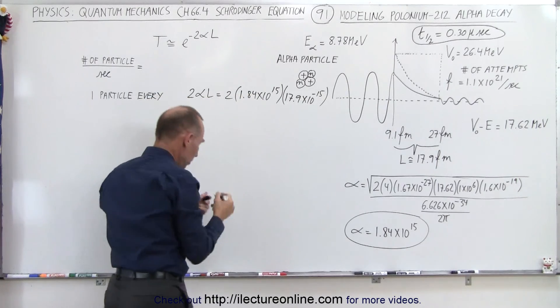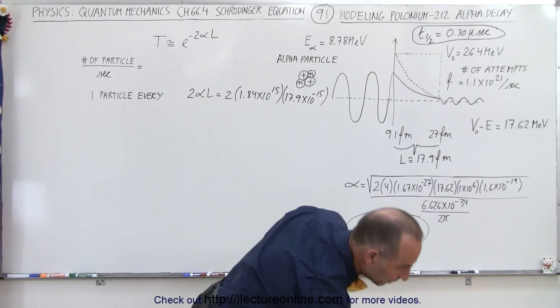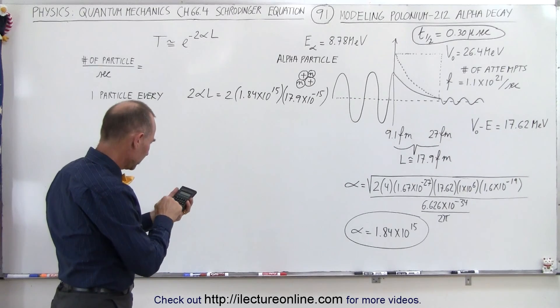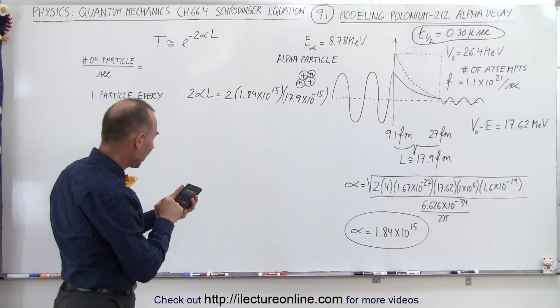So it gives us 2 times 1.84e15 times 17.9e-15.